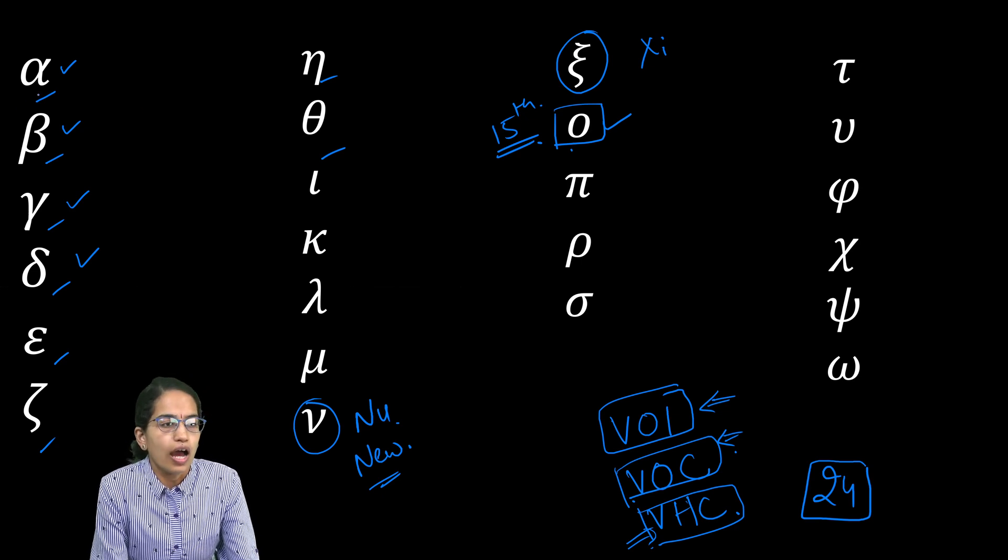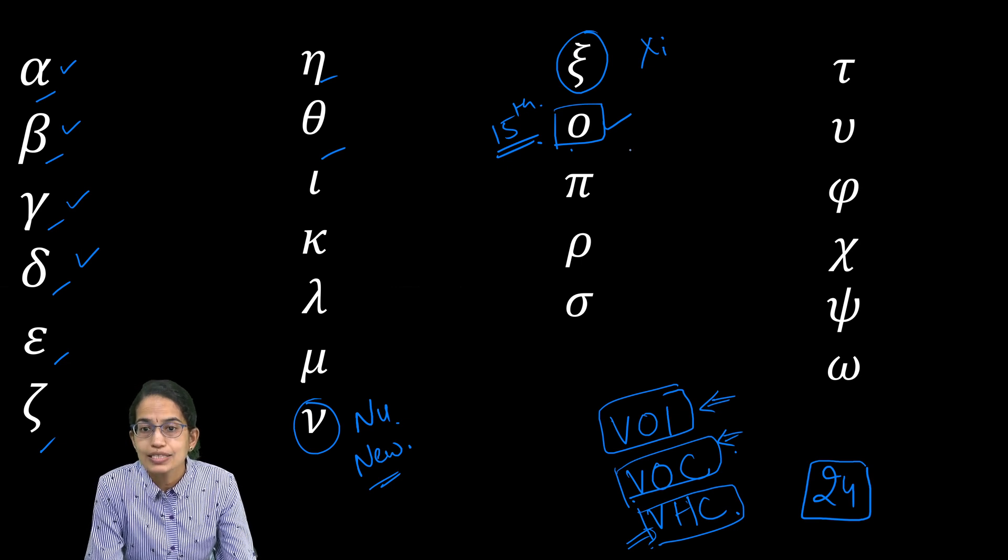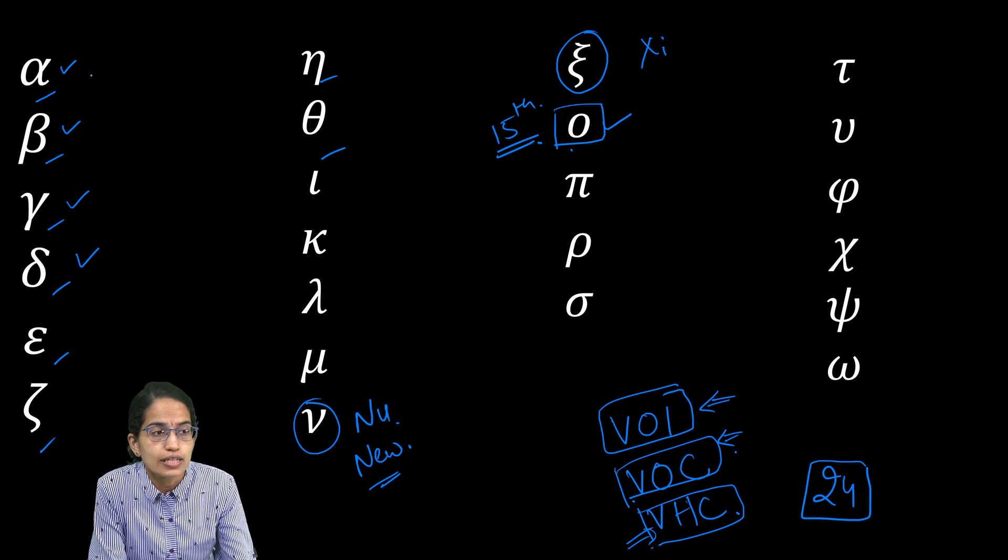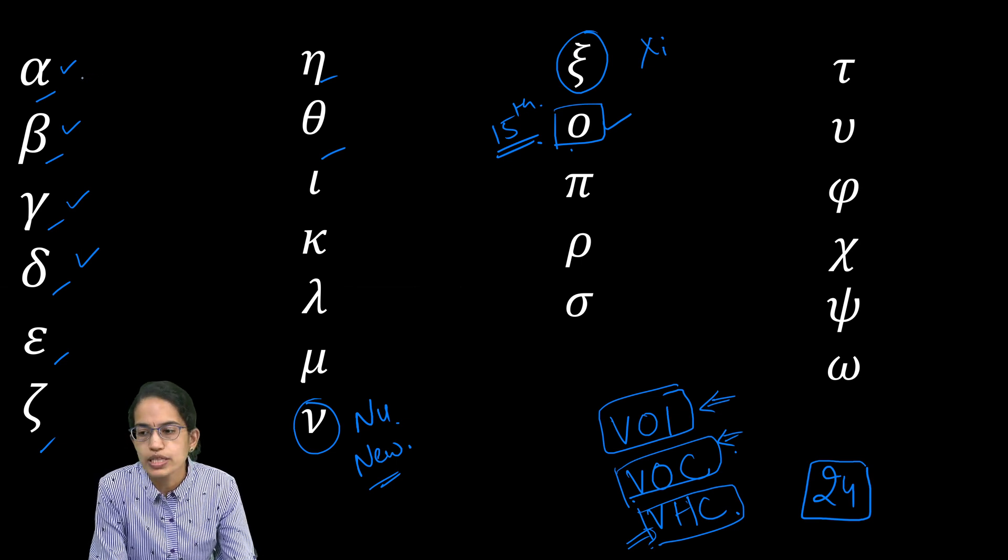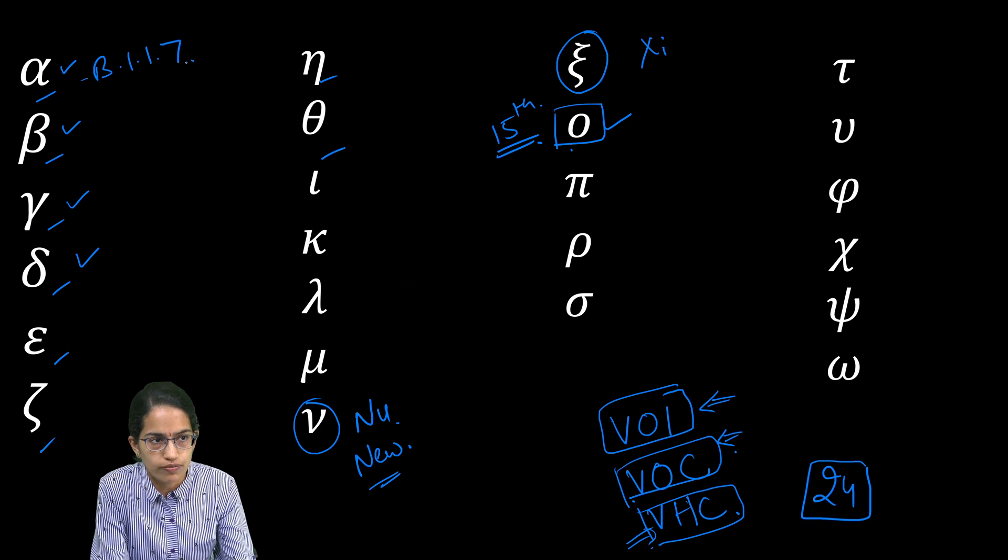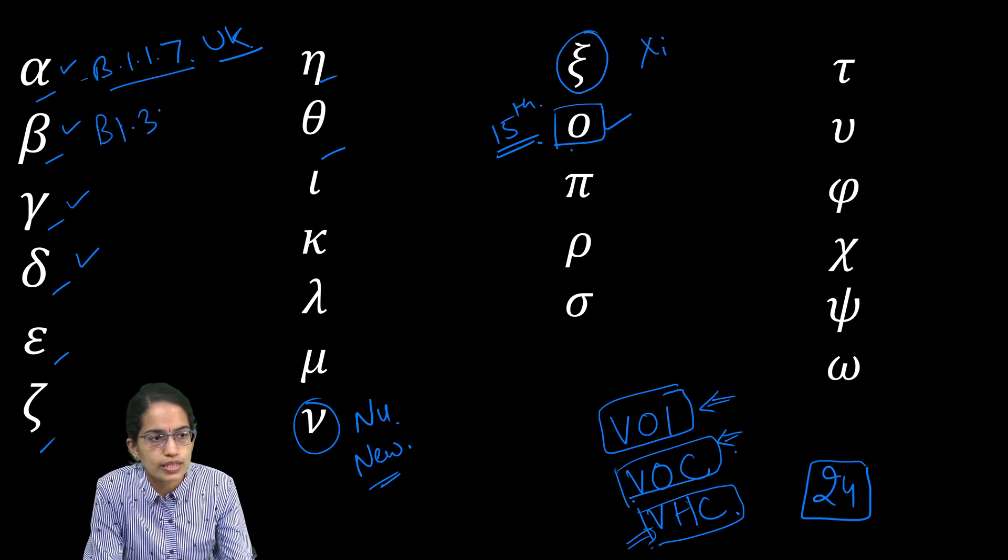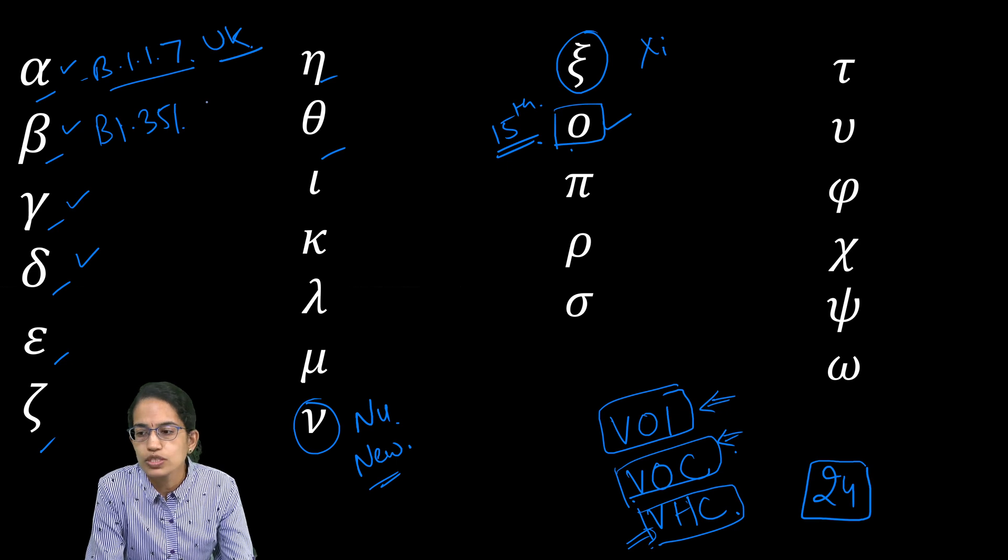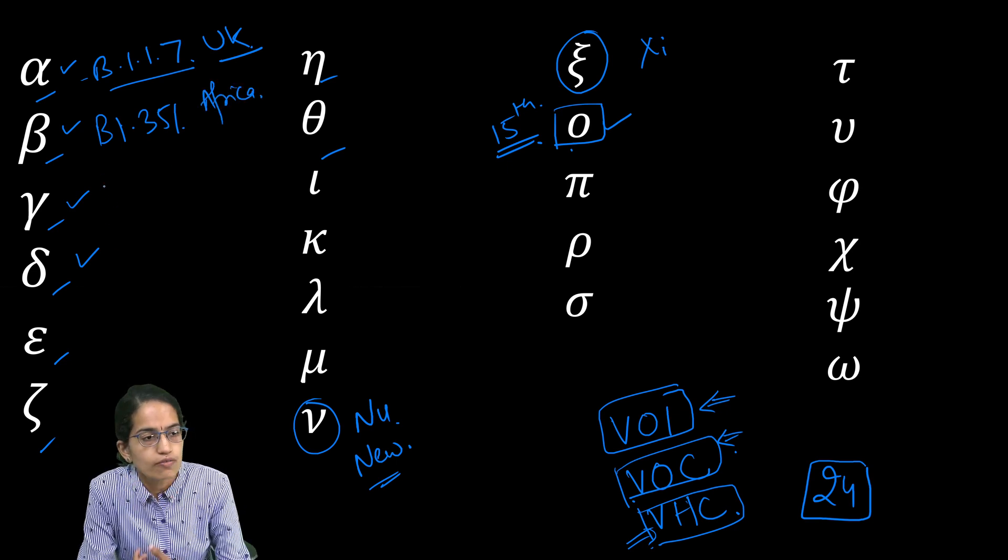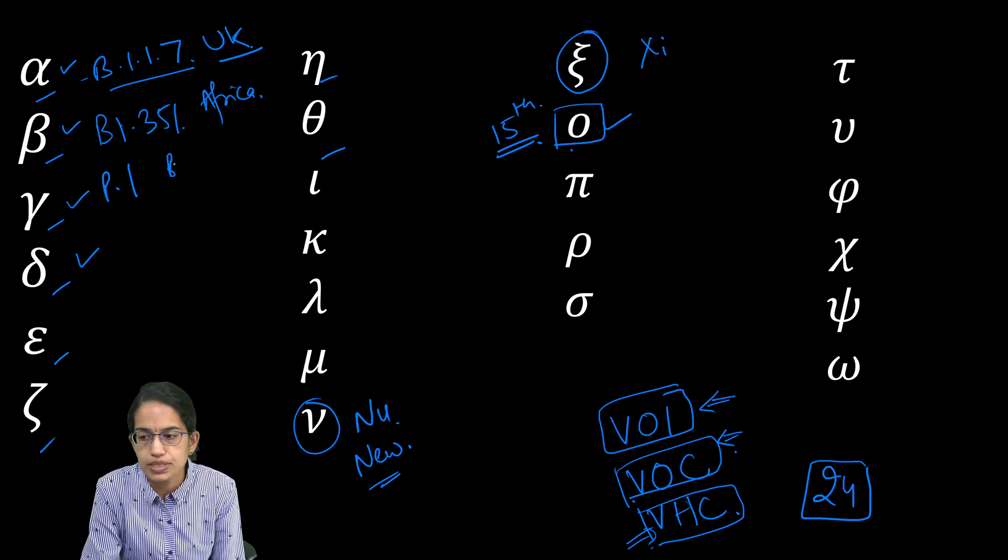Alpha, beta, gamma, delta, and omicron have been considered as high variants of concern. And what are the variations? In alpha, it was B1.1.7, it originated with the first origins seen in United Kingdom. Then we had beta with the variations of B1.351, and this was seen in Africa. The next was gamma with a variation and lineage of P1 seen in Brazil.